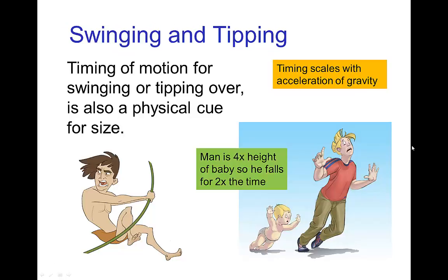As noted, the timing for swinging motion or tipping motion follows the same scaling as gravitational timing. In order to make things appear four times larger, you change the timing by a factor of two.